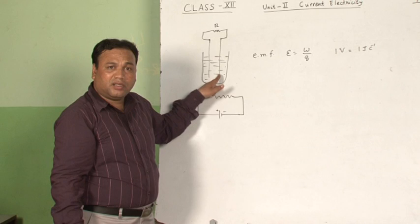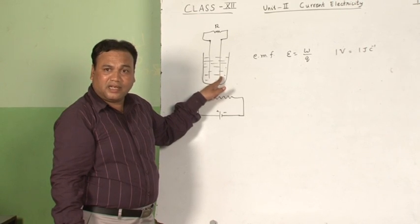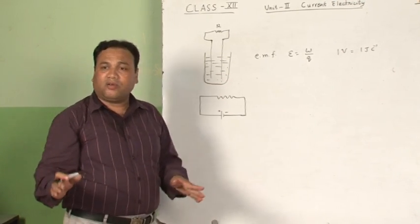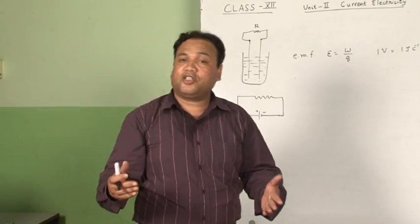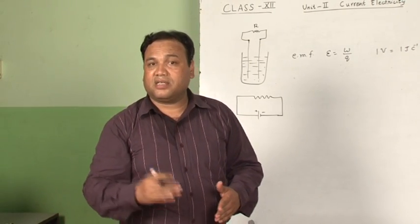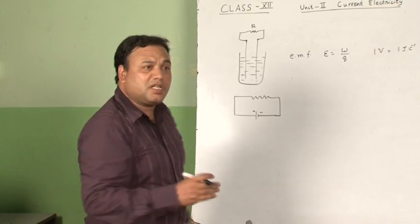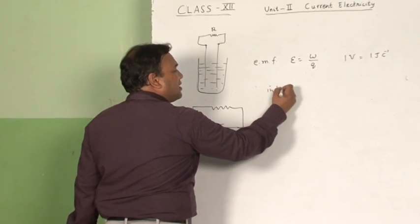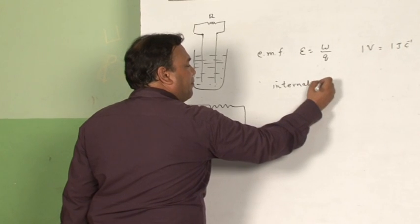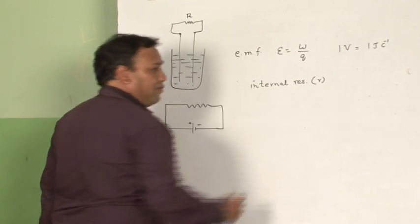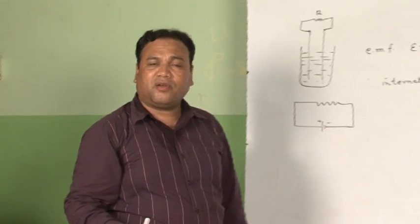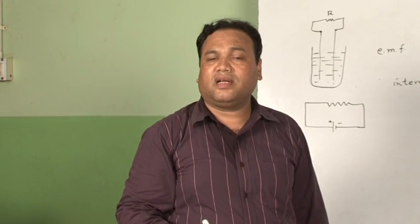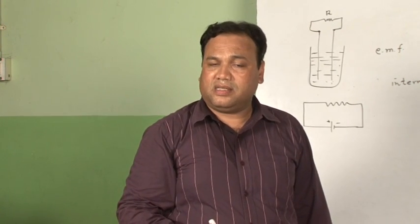When the current is flowing, inside this electrolyte also, the electrolyte and electrodes offer opposition to the flow of charges. This opposition is called the internal resistance of a cell. The opposition offered to the flow of charges by the electrolyte is called the internal resistance of the cell.